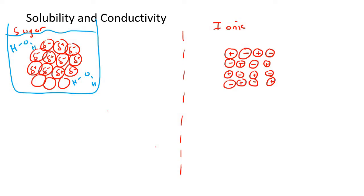I'm simplifying things here. Remember, water also has this property where the oxygen part is always a little bit negative and the hydrogen is always a little bit positive. You'll learn more about why that is in grade 11. In grade 10 we don't need to know that in detail.